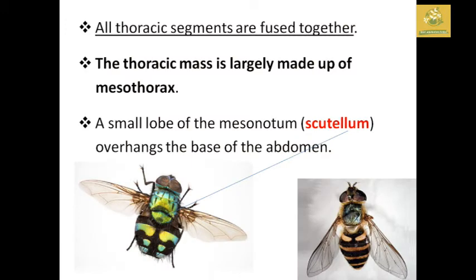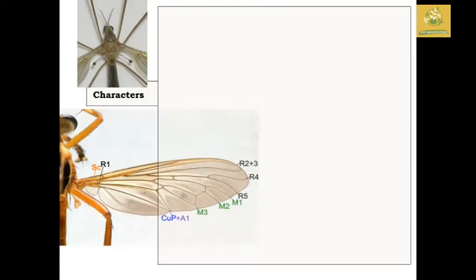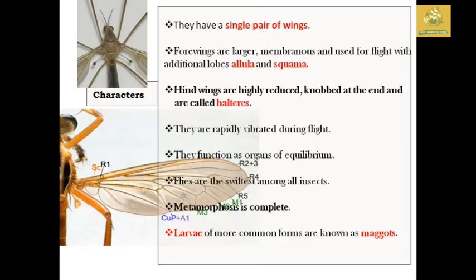All thoracic segments are fused to one another. The thoracic notum is largely made up of the mesothorax region, and a small lobe of mesonotum which is scutellum-shaped is present, which overhangs the base of the abdomen. They have a single pair of wings; the forewings are larger and membranous and used for flight. Additional lobes — alula and squama — are present. Hindwings are highly reduced and knob-shaped at the end, called halteres.